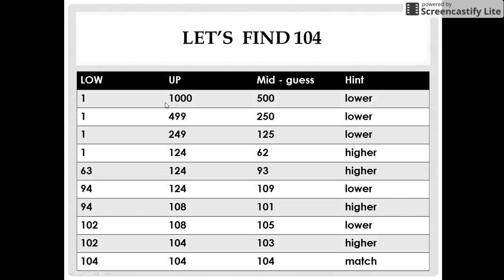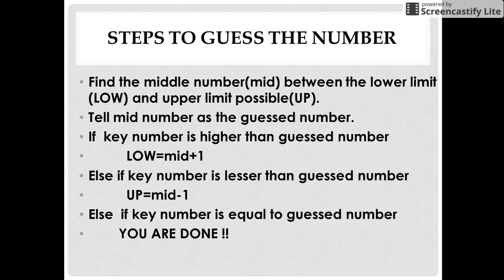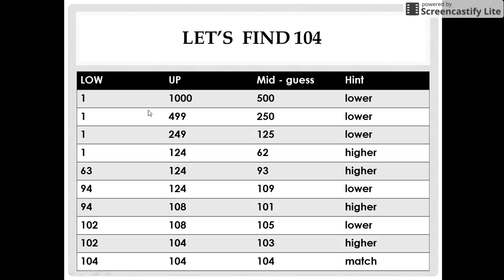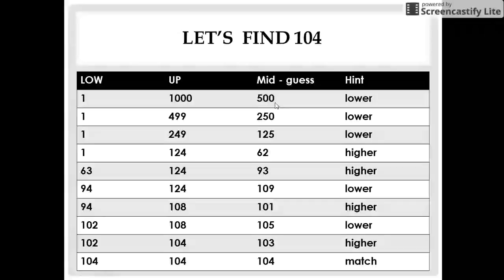The hint given now to you is lower, which means that the key number is lower than 500. So you change your upper limit to middle number minus 1, that is 500 minus 1 which is 499.